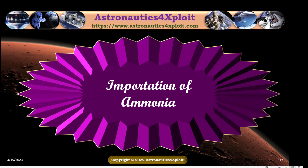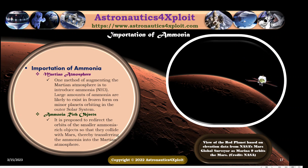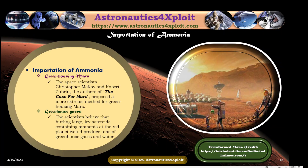Importation of ammonia is another method being looked at for Mars terraforming. One method of augmenting the Martian atmosphere is to introduce ammonia. Large amounts of ammonia are likely to exist in frozen form on minor planets orbiting in the outer solar system. It is proposed to redirect the orbits of these smaller ammonia-rich objects so that they collide with Mars, thereby transferring the ammonia into the Martian atmosphere. A view of the red planet based on elevation data from NASA's Mars Global Surveyor is shown in this picture.